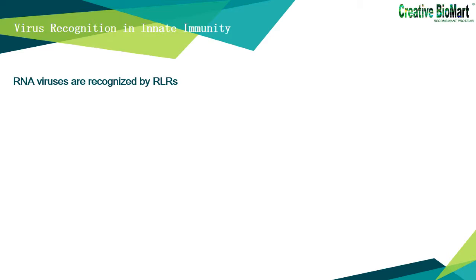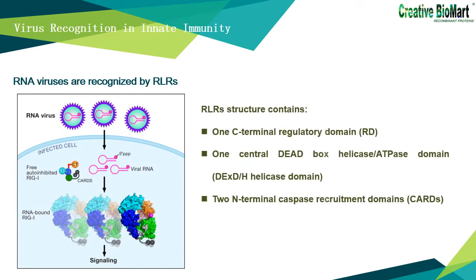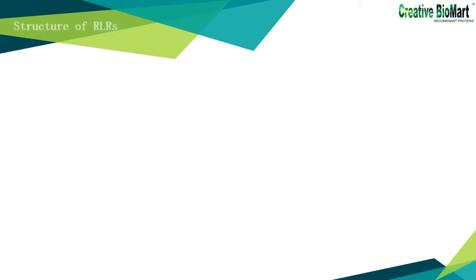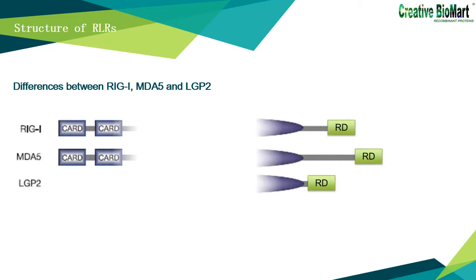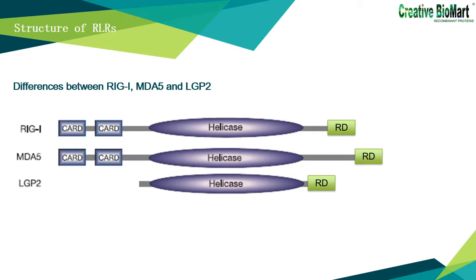RNA viruses are recognized by the RLR protein family. RLR family proteins are made up of a C-terminal regulatory domain, a central dead-box helicase/DRIS domain, and two N-terminal caspase recruitment domains (CARDs). They recognize genomic RNA like dsRNA viruses, or dsRNA produced by the replication intermediate of ssRNA viruses. RLRs are localized in the cytoplasm, and virus infection or type 1 interferon stimulation can greatly enhance their expression. RIG-I, MDA5, and LGP2 belong to the RLR family; LGP2 lacks a CARD domain.